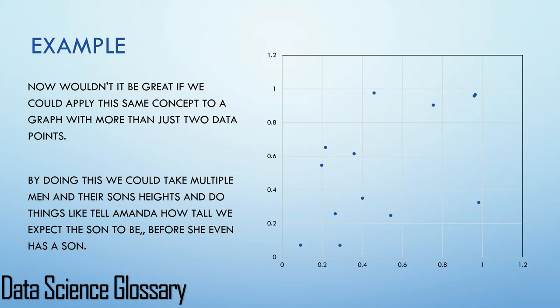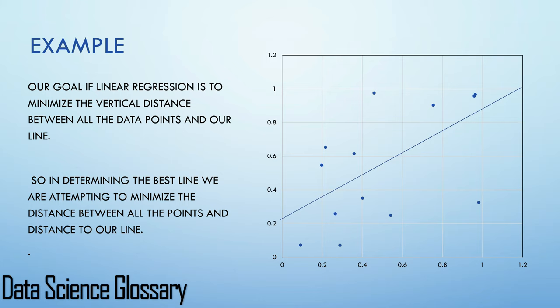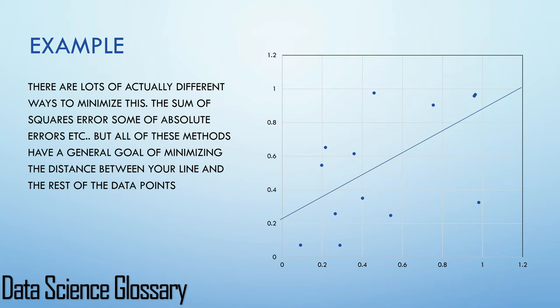Our goal with linear regression is to minimize the vertical distance between all the data points and our line. So in determining the best line, we are attempting to minimize the distance between all the points and our line. There are actually a lot of different ways to minimize this: the sum of squares error, sum of absolute errors, etc. But all of these methods have a general goal of minimizing the distance between your line and the rest of the data points.